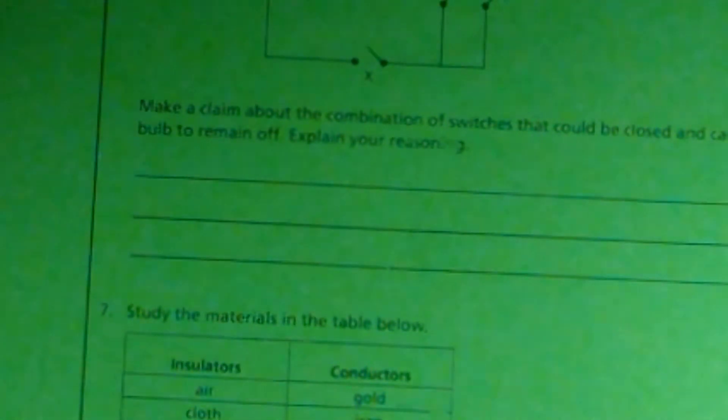Our next one, the circuit below consists of a battery, a light bulb, and three switches. All the switches are open and the light bulb is off. Make a claim about the combinations of switches that could be closed and cause the light to remain off.